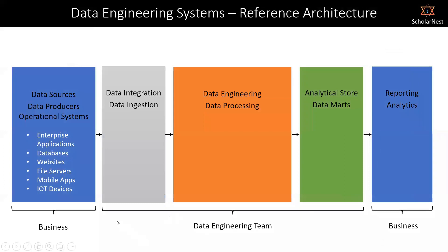These three middle blocks represent the data engineering project — whatever we do as a data engineering team. On the left side, we have business data sources, also called data producers or operational systems, or in general business units that own data. These could be enterprise applications, databases, websites, file servers, mobile apps, IoT devices. The list is long.